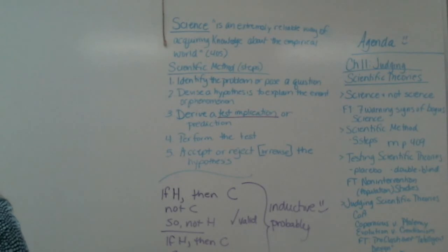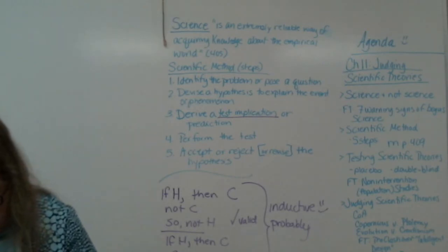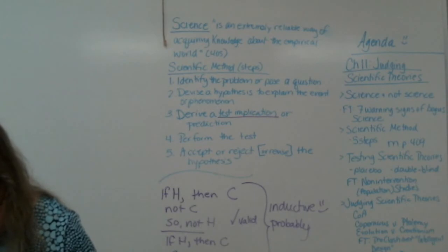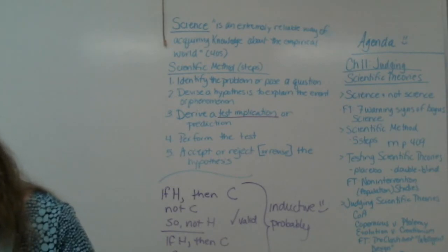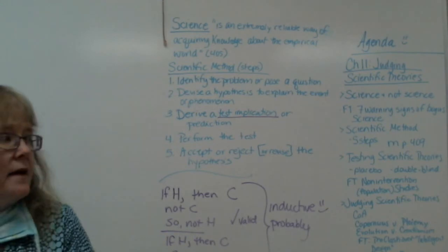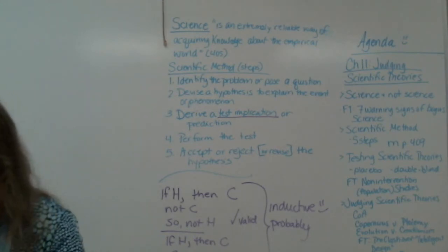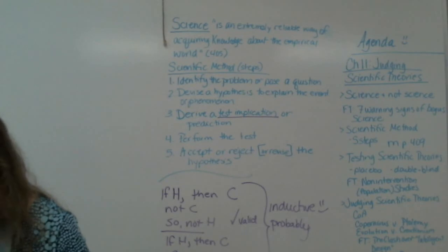Judging scientific theories - bottom of page 412. For scientific theories we're using the COA: testability, fruitfulness, scope, simplicity, conservatism. Dr. Vaughn is going to take us through Copernicus versus Ptolemy.